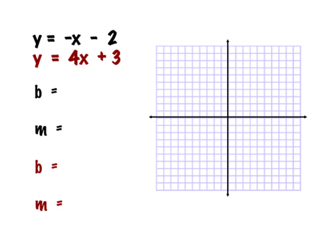Let's take a look at how to graph a system of equations. I've got two linear equations here and they're both already in slope-intercept form. I've written them in two different colors and I'll graph them in two different colors so we can see the difference. My first equation, in black, has b — my starting point — at negative 2, and my slope is negative 1, which I'll write as negative 1 over 1. I'll graph a point at negative 2 on the y-axis, then go down 1, right 1 to create new points.